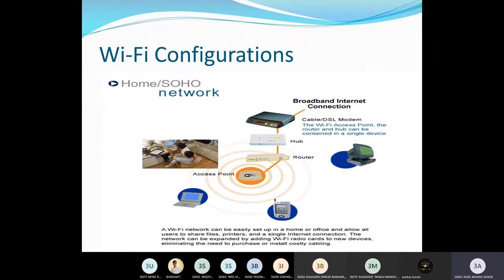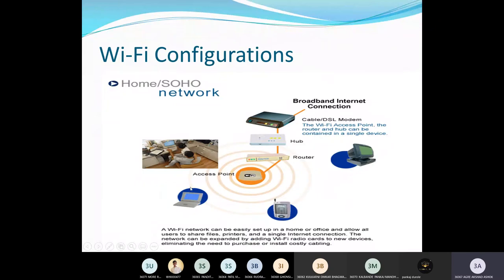For Wi-Fi configuration, a broadband internet connection is connected through a hub and router, as previously discussed. This covers the connection of hubs and routers.